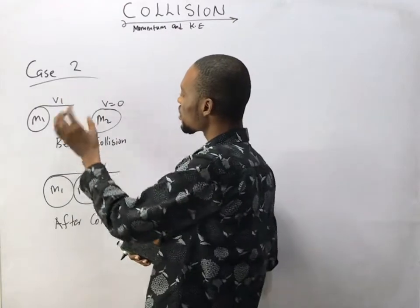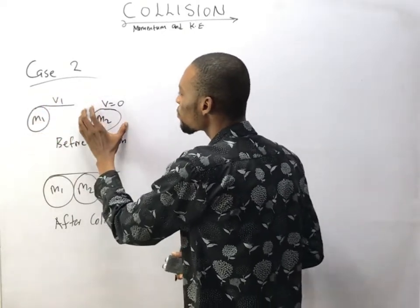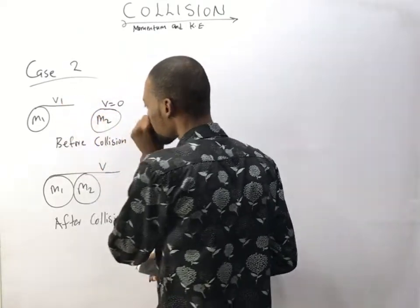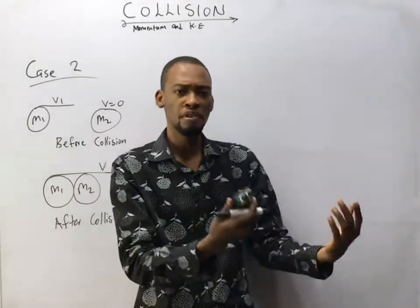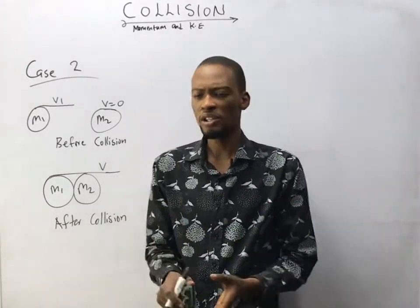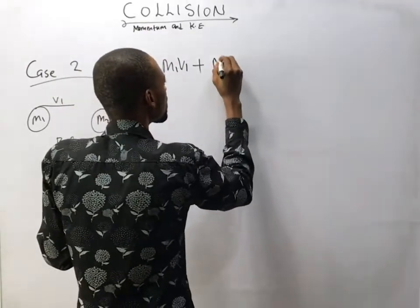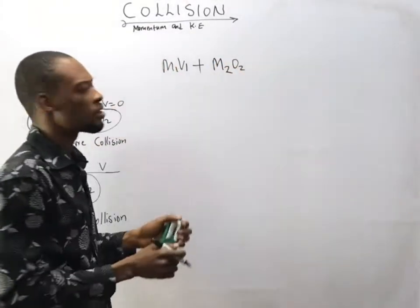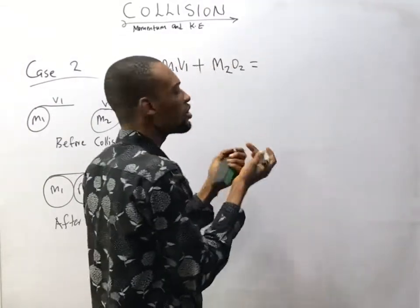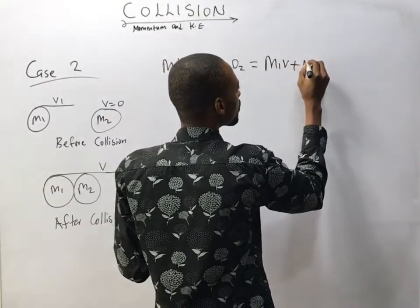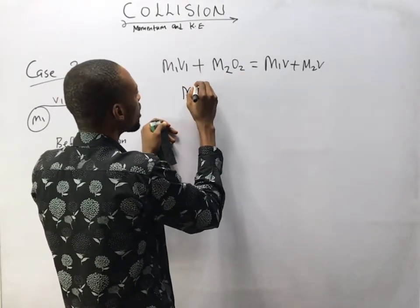Now look at Case 2. Before collision, the first object was moving with its own velocity v1, however the second body was stationary — meaning v2 equals zero. After collision, both bodies move with the same velocity. Before collision, the momentum is simply m1v1 plus m2 times zero, and since m2 times zero is zero, the total momentum before collision is just m1v1.